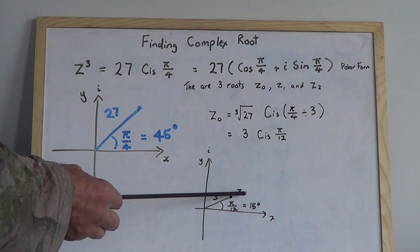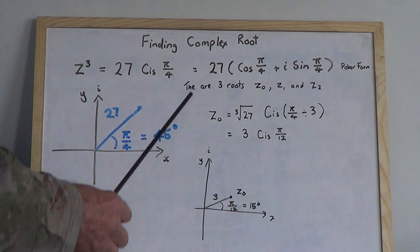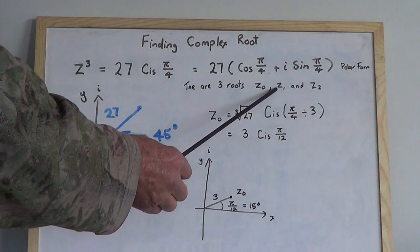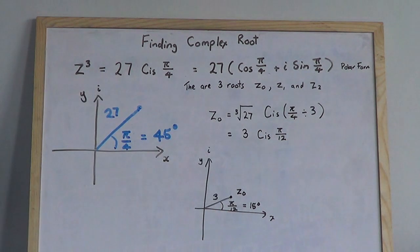Now there are three roots: z₀, z₁, and z₂. I'm going to show you a simple way to find the other ones.